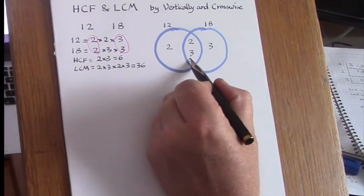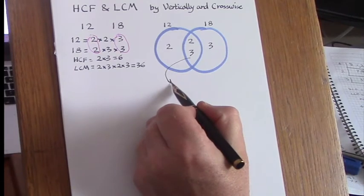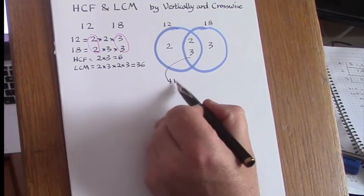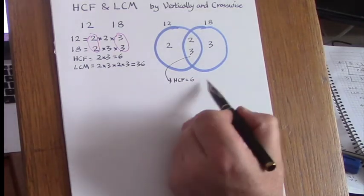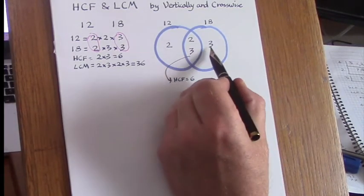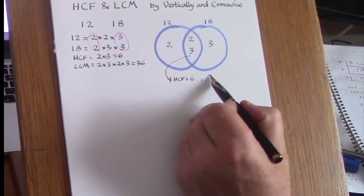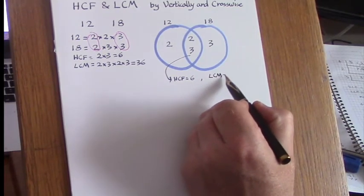The product of the numbers in the intersection is the HCF, so the HCF is 2 times 3 is 6, and then the product of all four of these numbers gives the LCM, again 36.